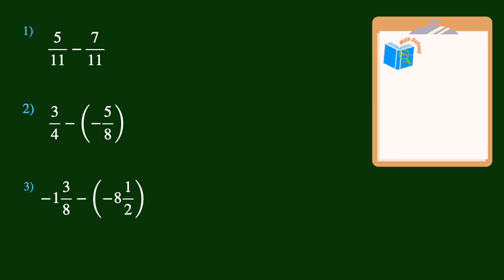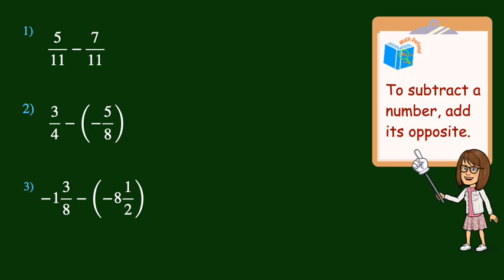A key concept in subtracting rational numbers is understanding that subtracting a number is the same as adding its opposite. Let's look at this first problem. Instead of thinking of subtraction here, think of adding the opposite. So instead of positive 5 elevenths minus positive 7 elevenths, think of it as positive 5 elevenths plus negative 7 elevenths.